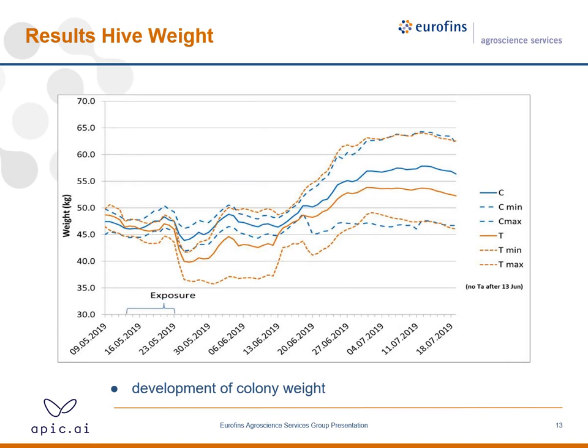Could we see these results in the hive weight? Yes, we could. During exposure, the hive weights were very similar, but at the end of exposure the hive weight of the treated hives declined quite dramatically and stayed lower than the control hives. At the end of June, the variability between hives increased substantially. The hive where the queen was lost was excluded after the 13th of June.